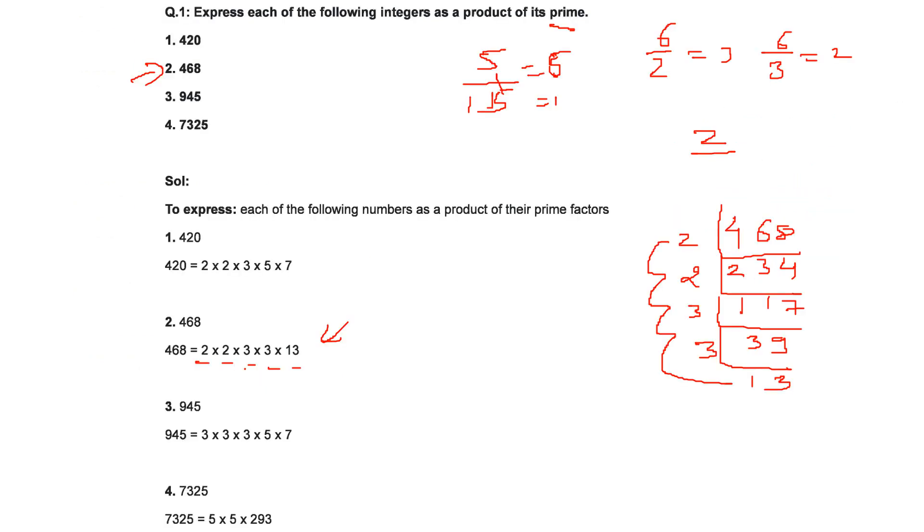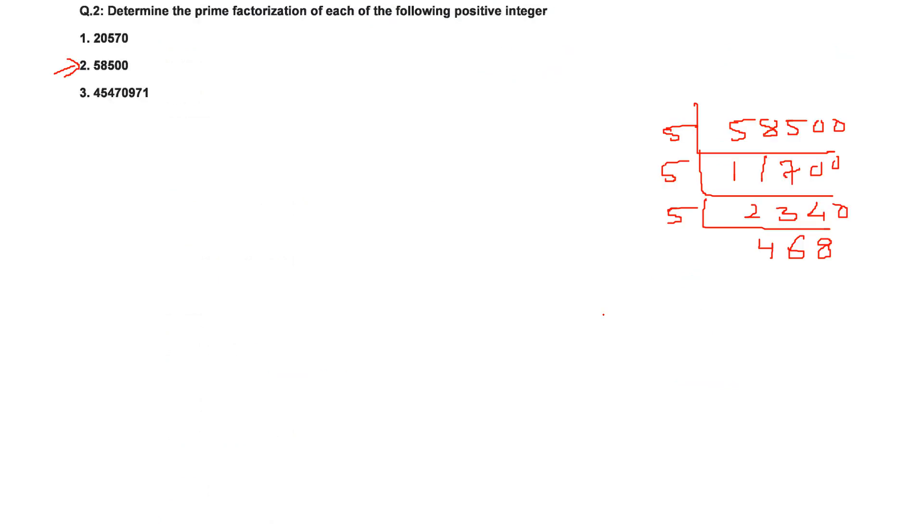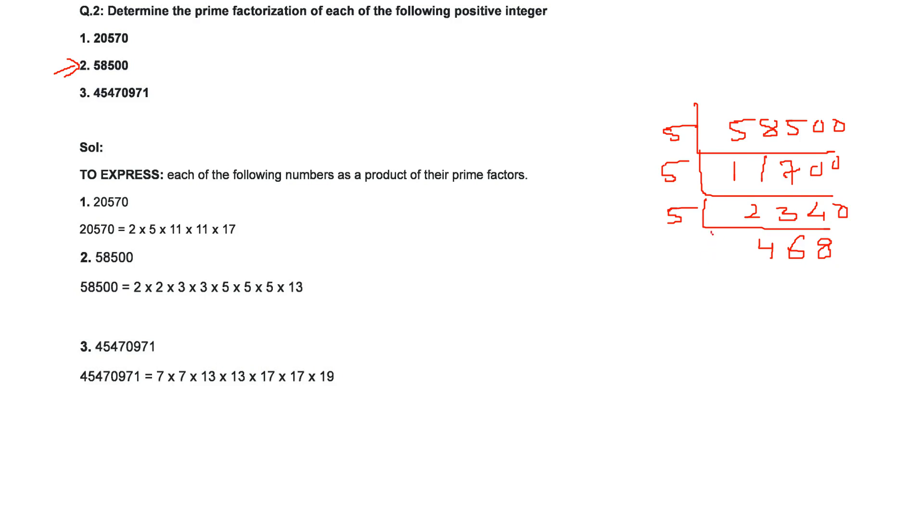2 into 2 into 3 into 3 into 13. So this will be 5 into 5 into 5, then 2, 2, 3, 3 and 13.